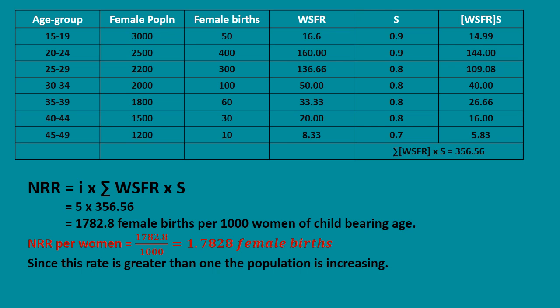We already know that if NRR is exactly equal to 1, the next generation exactly replaces the population. If NRR is greater than 1, the population increases; if less than 1, the population decreases. In this case, the NRR value is 1.7828, which is greater than 1, so the population is increasing.